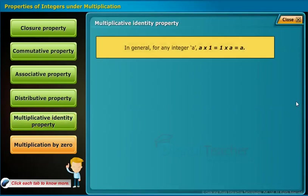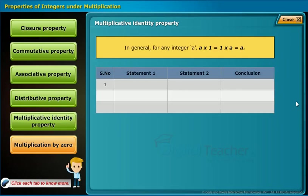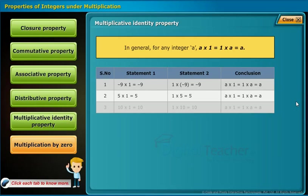Multiplicative identity property defines that for any integer a, a into 1 equals 1 into a equals a. For example: minus 9 into 1 equals minus 9, and 1 into minus 9 equals minus 9. The same holds for the second and third statements. Therefore, the table follows multiplicative identity property under multiplication.